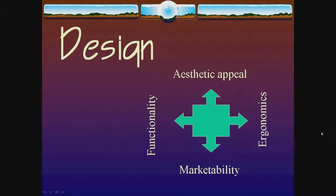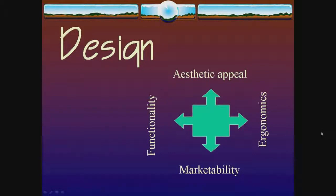Whether you talk about a mobile, a home, or any other object you own, aesthetic appeal comes first. Then once you touch it, you find out the ergonomics — how well it can be handled. In shops they give you a mock-up that feels and weighs about the same. Then you come to the functionality of it, and finally it seems to be about how well the product can be marketed.